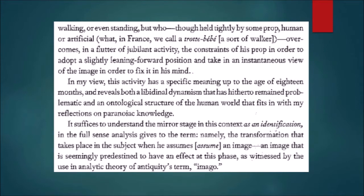The mirror stage happens only up to 18 months. When the child acquires language and forms social bonds, the mirror stage as a developmental phase comes to an end. But the dynamic relationship between the subject and his image remains a perpetual force in the subject's psychic life. Thus, this event has a specific meaning only up to the age of 18 months.